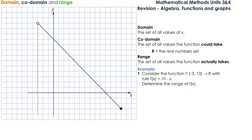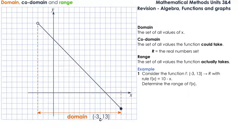The domain of the function is negative 3 to 13, which means the values of x are within these two values. At negative 3, we have a round bracket, which corresponds to a circle, which means that the point is not part of the domain. At the other end, we have a square bracket, which corresponds to a dot, meaning that point belongs to the domain — so x does take that value.